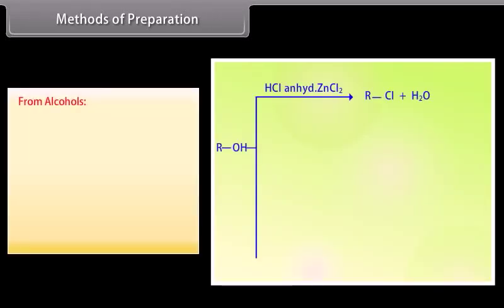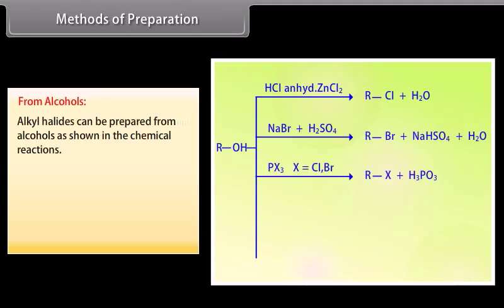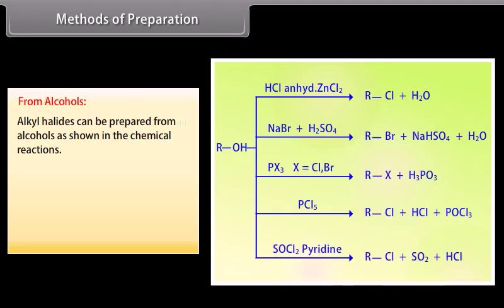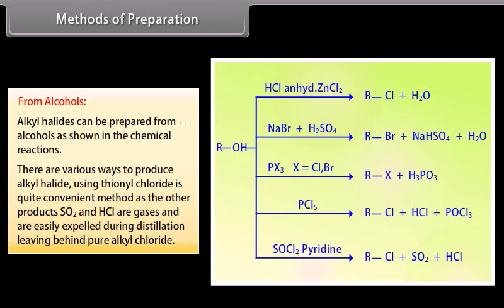Methods of Preparation. Alkyl halides. Alkyl halides can be prepared from alcohols as shown in the chemical reactions. There are various ways to produce alkyl halides using thionyl chloride and is quite a convenient method, as the other products SO2 and HCl are gases and are easily expelled during the distillation, leaving behind pure alkyl chloride.